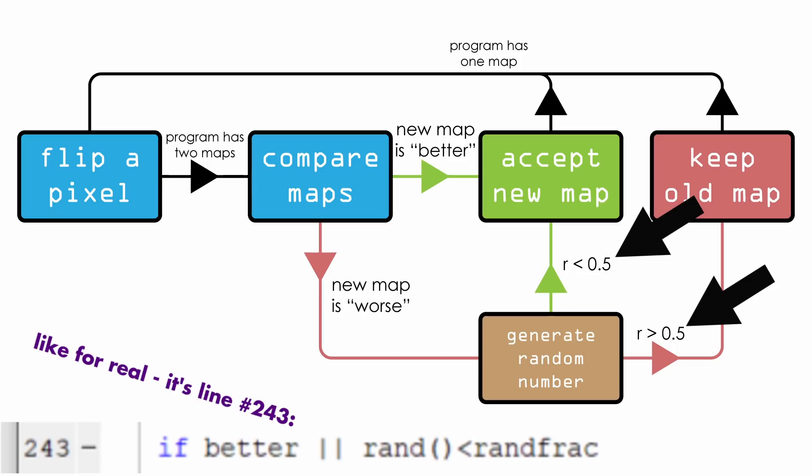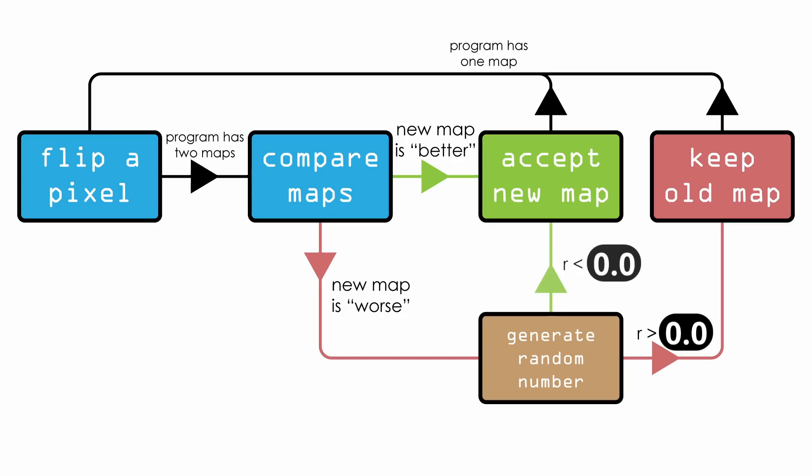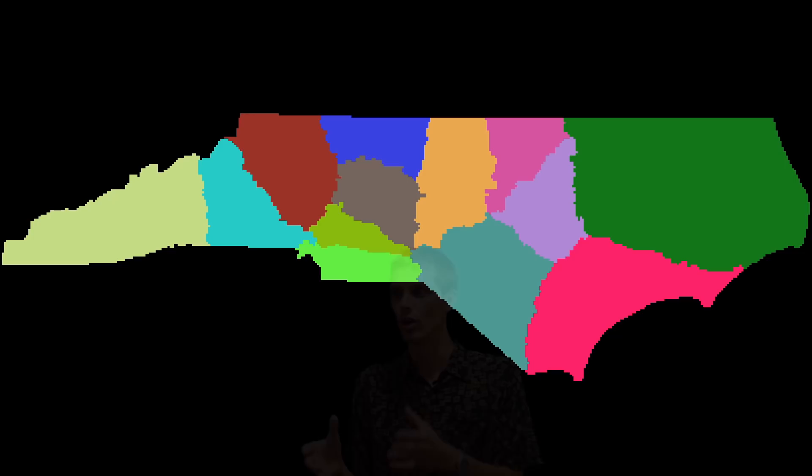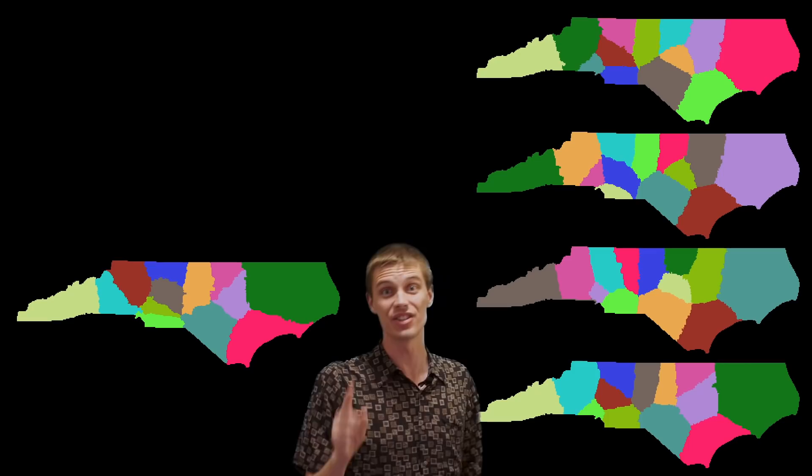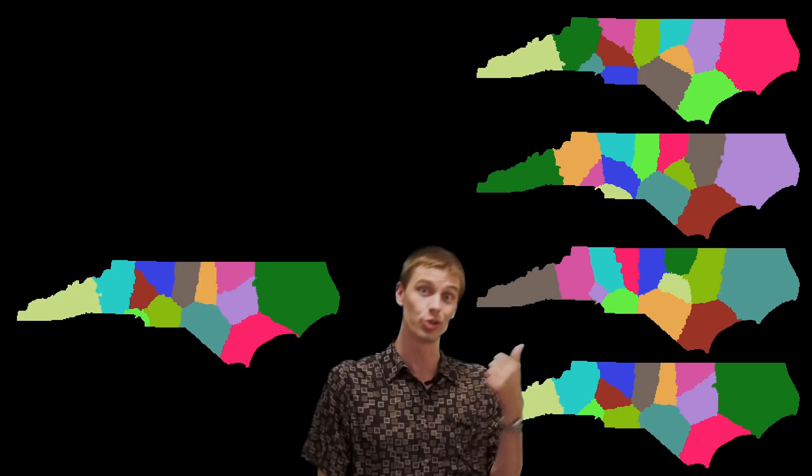If the program throws out every bad map and only accepts good maps — setting this number to zero — the code just stops running. It fiddles with borders a little bit, and then from that moment forward every conceivable pixel flip would make the map worse than what you have. That isn't to say you then have the best map; you just have the best map relative to all other maps that vary from it by a single pixel. The map is stuck — randomness is zero and it has stopped evolving. All of these other maps are better, but they're completely different and you can't get there by changing a single pixel.